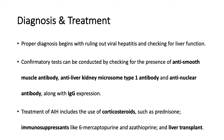For diagnosis of autoimmune hepatitis, since it shares many symptoms with viral hepatitis, viral hepatitis must be ruled out first, followed by checking liver function. As a confirmatory test, the presence of certain antibodies — such as anti-smooth muscle antibody, anti-liver kidney microsome type 1 antibody, and anti-nuclear antibody, along with immunoglobulin G antibody expression — can act as markers to confirm autoimmune hepatitis and rule out viral hepatitis.